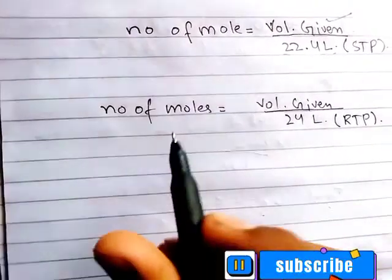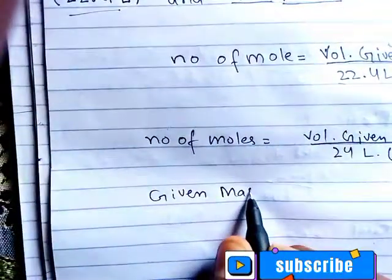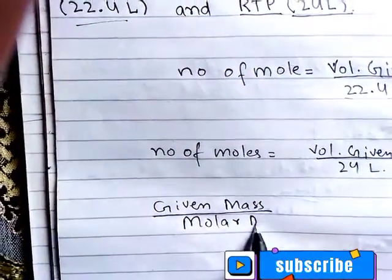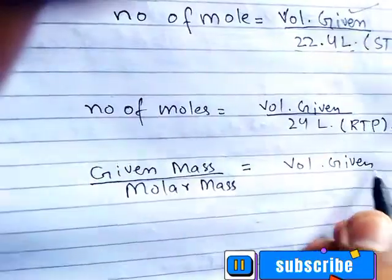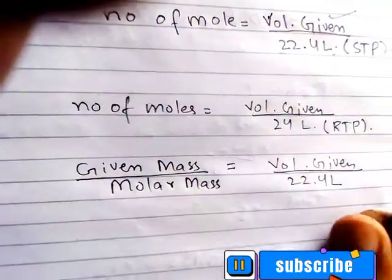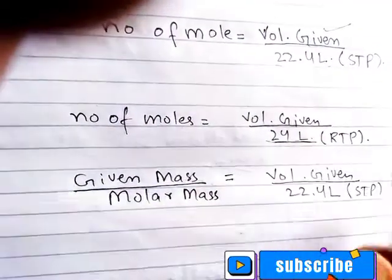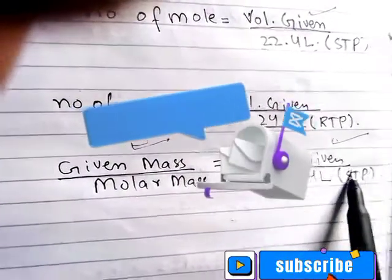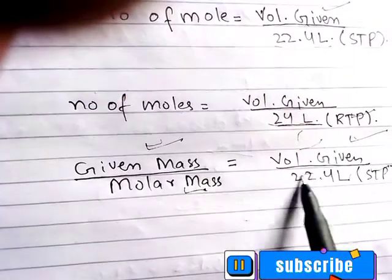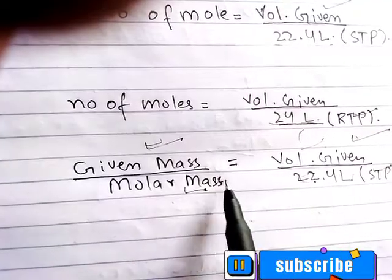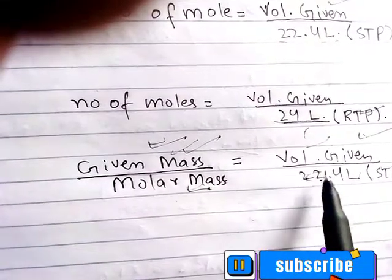Now for mass: the formula for number of moles equals given mass divided by molar mass, as covered in the last class. If we know the moles, we can find the volume. At RTP, we use 24 L, and we can apply it to the number of moles to find volume. Given mass, molar mass, and the molar volume value — you can easily find it.